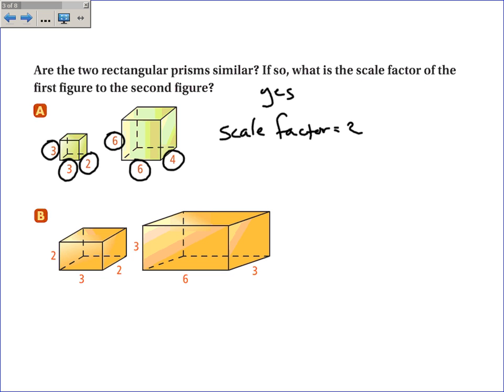Number 2, I'm sorry, B. 2 to 3 is a scale factor of 1.5. So, 3 to 6 is not 1.5, it's 2. And so, this ratio is different than this ratio, which means they're not similar.